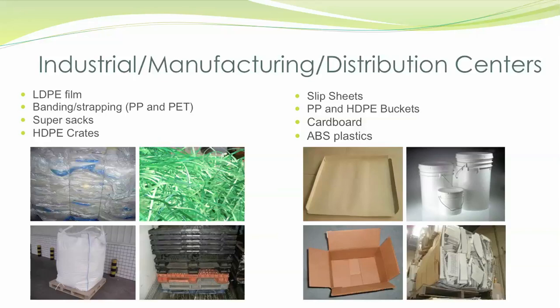LDPE film, for example, has three grades: A, B, and C. The highest quality grade is A, meaning it's mostly clear film free of stickers and other colored film. The more colored film, stickers, and other contaminants you have, the lower the grade. And the lower the grade, the lower the rebate.